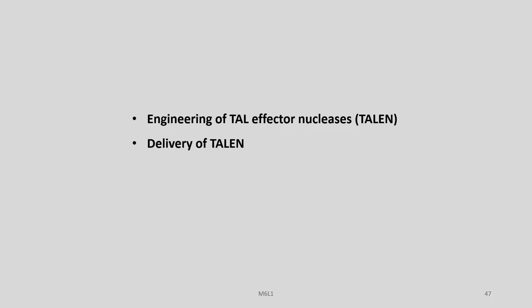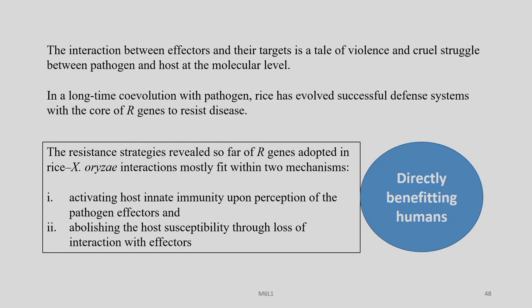Let us now move to the next part of this lecture. We talked about engineering of TAL effector nucleases (TALENs) and once we engineer them or synthesize them, how do we deliver them? The interaction between effectors and their targets is a tale of violence and struggle between pathogens and hosts at the molecular level. We know that the bacteria tries to send in the TAL effectors through the T3SS, which land up finally in the nucleus, transcriptionally activating certain susceptibility genes, thereby weakening or killing the host, allowing the bacteria to draw nutrients from the killed or weakened host.